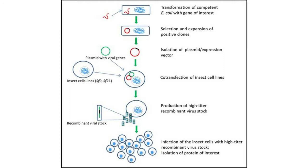Once you create that baculovirus, what you do is grow an insect cell line — SF9 insect cells — and you infect those cells with the baculovirus. Then what happens is after about two days, depending upon the titer of the virus — titer is just another word for concentration — you can get those insect cells to express your protein in massive quantities.